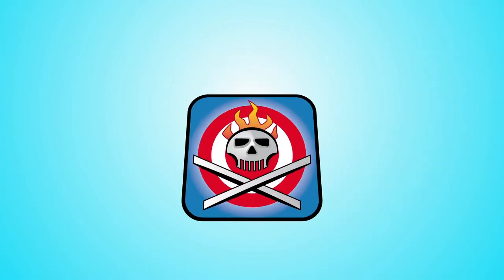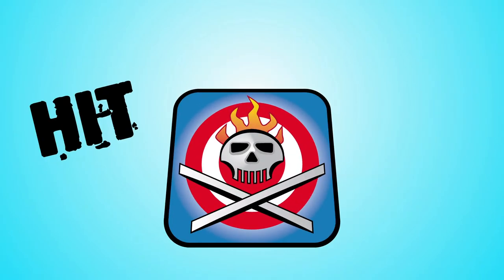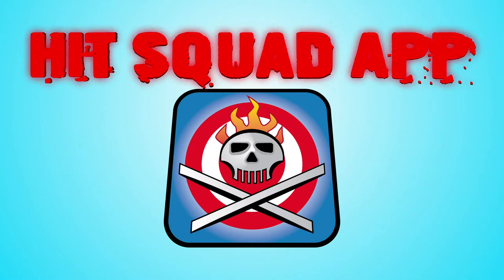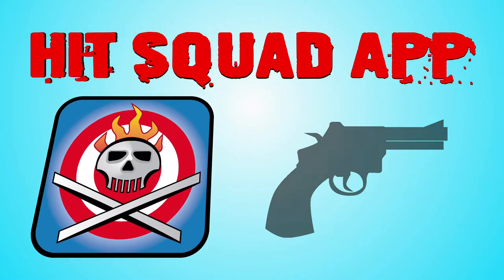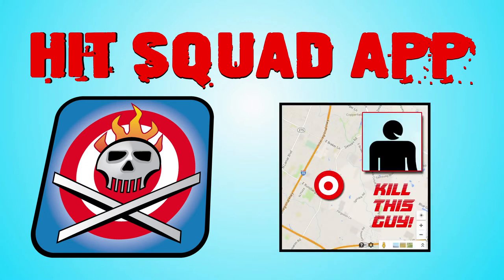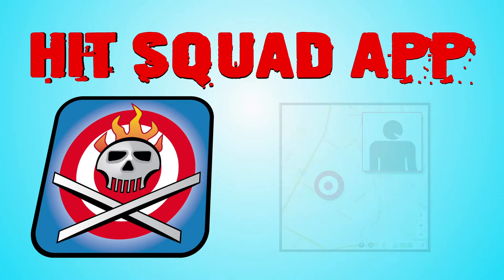The Hit Squad App can have your enemies eliminated by your choice of gun, knife, blunt trauma, even explosives, with a click of a button. Hit Squad App uses GPS to mark the location of your target and acquire a picture of the son of a bitch that's asking for it.